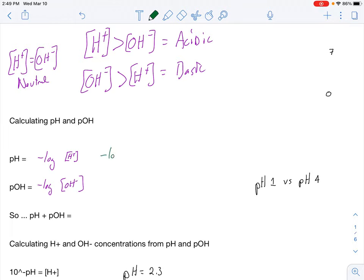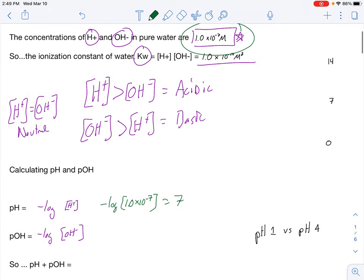In my calculator, and you should probably try this, I would take the negative log of 1.0 times 10 to the negative 7th. When I do that, I get a value of 7. So a pH of 7 would be pure water. And that relates to our pH scale over here as a neutral concentration of hydrogen ions compared to hydroxide ions, because they are the same.